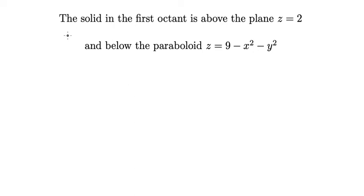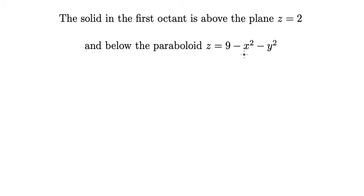We want to find the volume of the solid in the first octant that is above the plane z equals 2 and below the paraboloid z equals 9 minus x squared minus y squared.